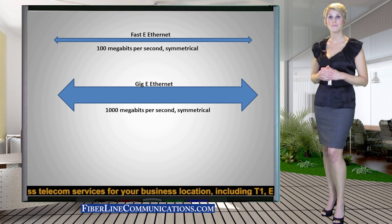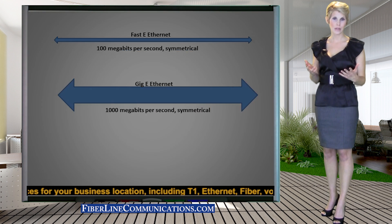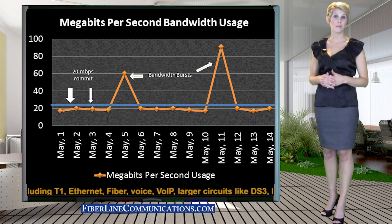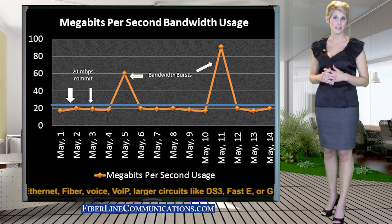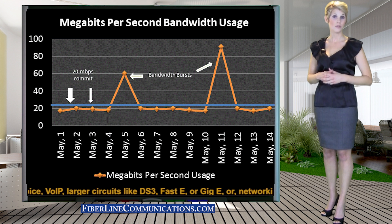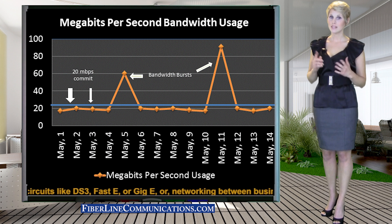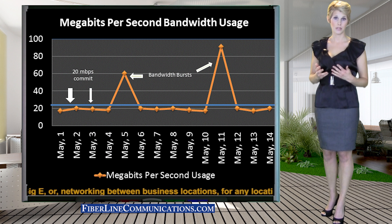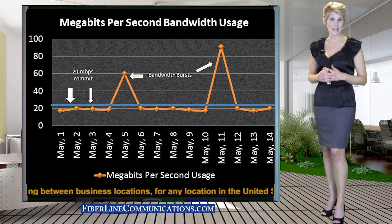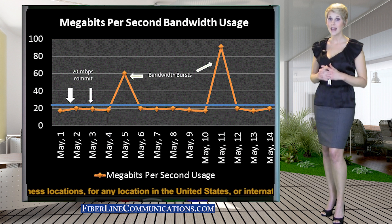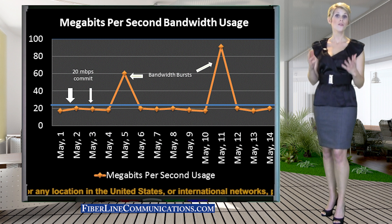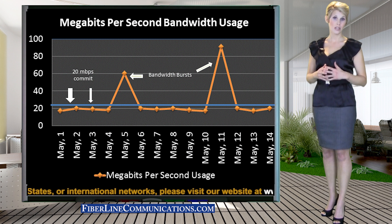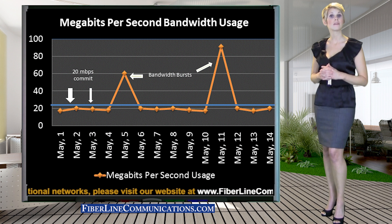Metro Ethernet is often burstable. For example, a business can order a burstable Fast E circuit and pay for a minimum of 20 Mbps of bandwidth per month if this meets their normal requirements. However, if this same business has unique periods throughout the billing month where they need short bursts of increased bandwidth, with the burstable Fast E they will receive extra bandwidth in real time, having the ability to burst all the way up to 100 Mbps as needed. They will only be charged for the bandwidth they used and for the period of time that they used it.